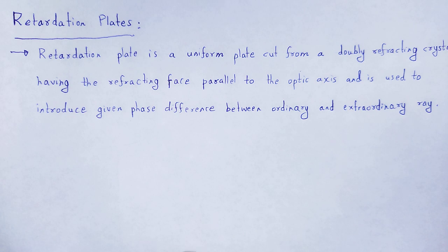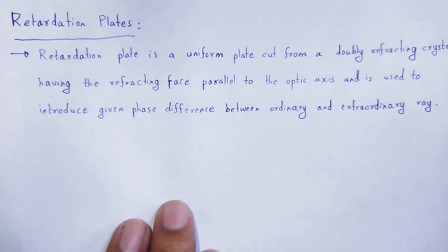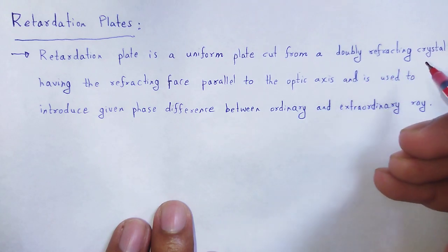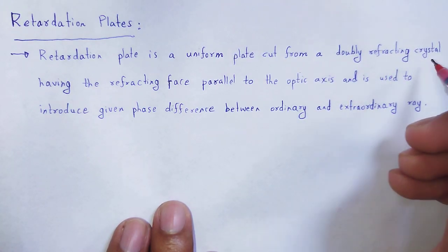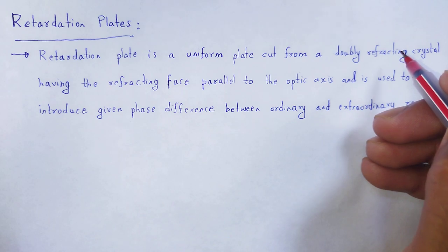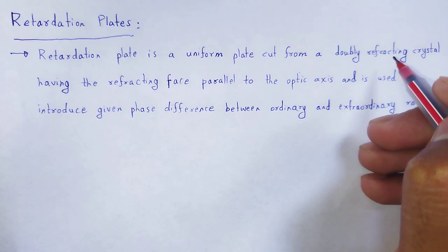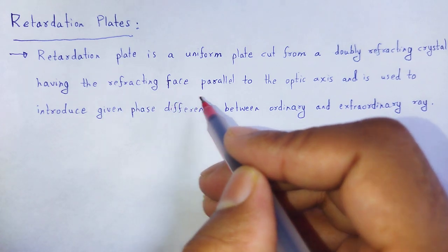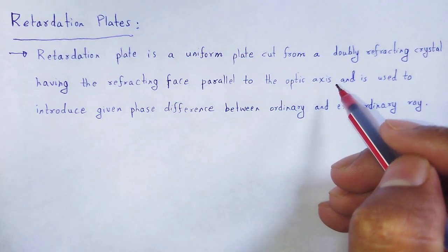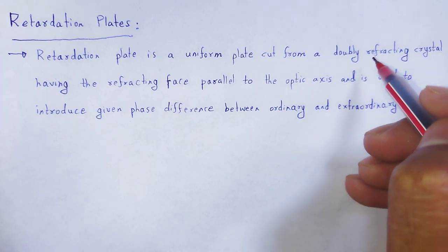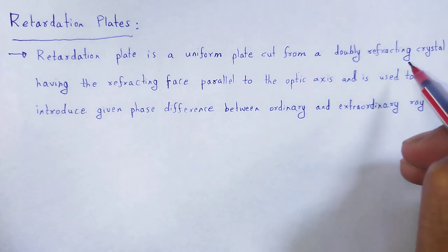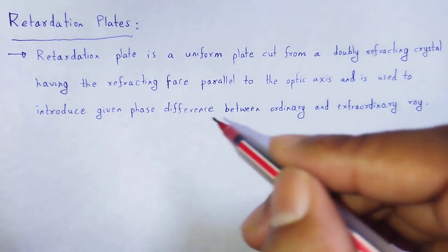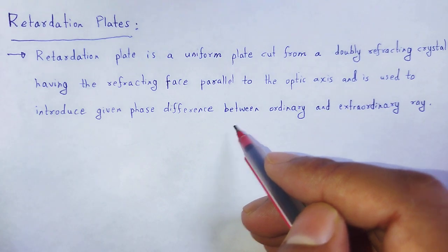A retardation plate is a uniform plate that is cut from a doubly refracting crystal. An example of a doubly refracting crystal is the calcite crystal, in which the phenomenon of double refraction occurs. That doubly refracting crystal has its refracting face parallel to the optic axis. The optic axis is that axis in a doubly refracting crystal where the two refracted rays travel with the same velocity.